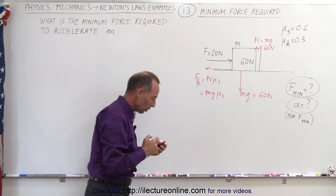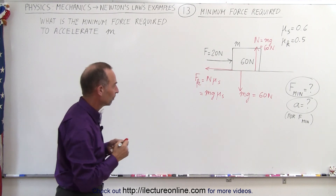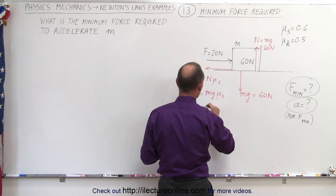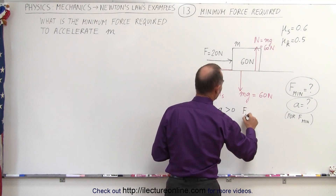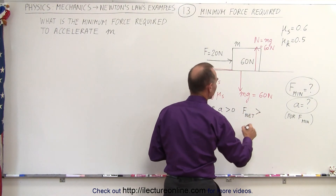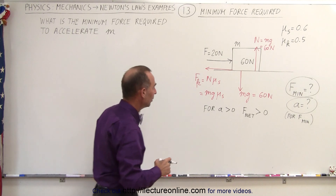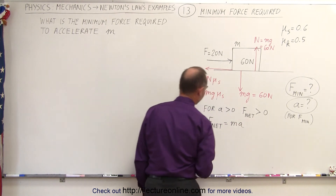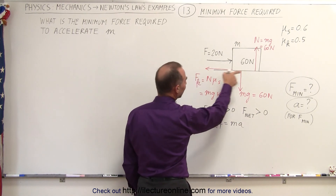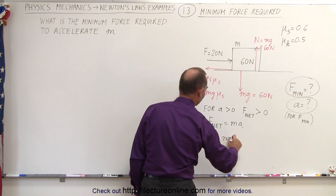Let's see if there's going to be an acceleration if we only apply 20 Newtons. For acceleration to be greater than zero, we need F_net to be greater than zero — if you don't have a net force, you don't have an acceleration. We can write F_net = ma, where the net force equals all forces aiding minus all forces opposing the acceleration: F_applied minus F_friction equals ma.